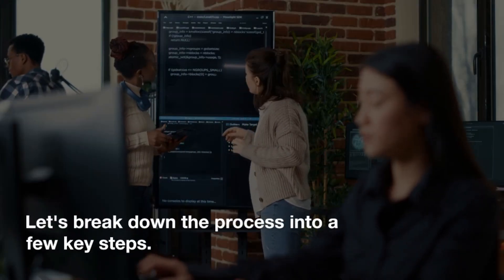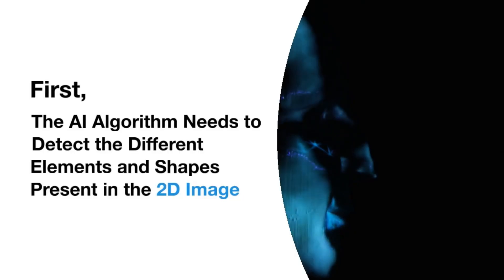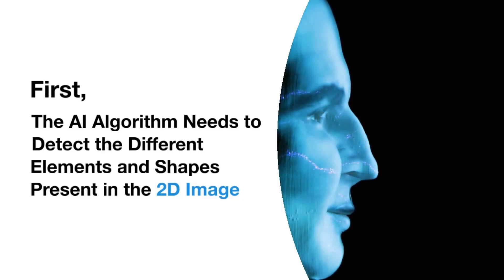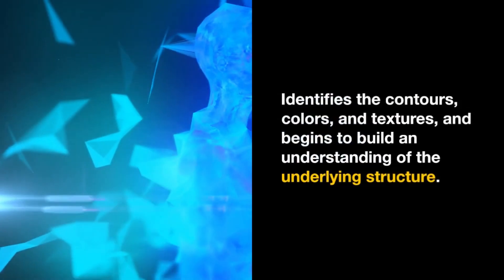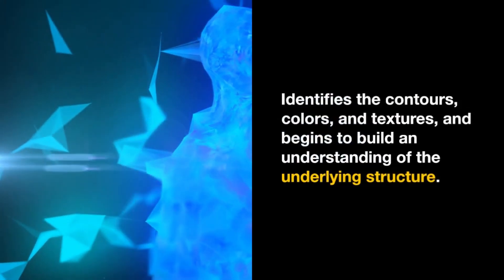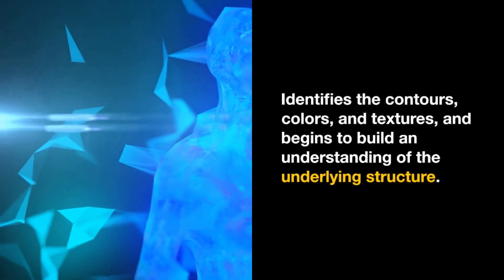Let's break down the process into a few key steps. First, the AI algorithm needs to detect the different elements and shapes present in the 2D image. It identifies the contours, colors, and textures, and begins to build an understanding of the underlying structure.